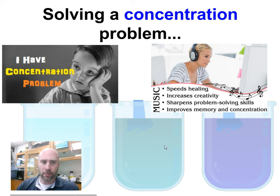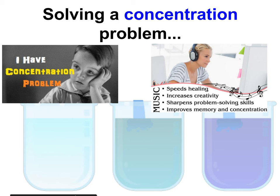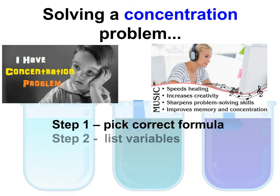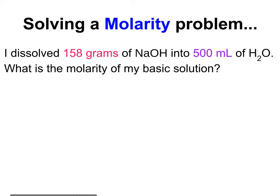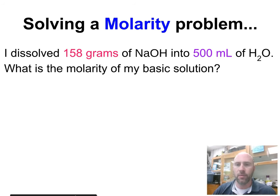To solve a concentration problem, there's just a few steps that we're going to do. Number one, make sure you're using the correct formula. Number two, list out your variables. This is all the same process we've done before. Convert anything you need to. If you need to get to moles, make sure you convert to moles. If you need to convert to liters, make sure you're converting to liters. And then lastly, you're going to calculate your answer. So let's have a look here at a problem and see if we can figure this one out.